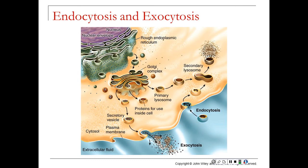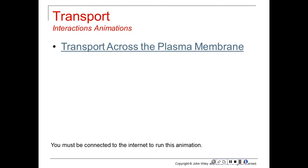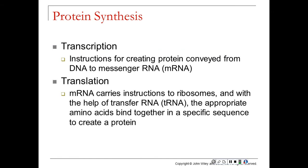Here you can see the whole pathway: endocytosis — the cell engulfing a substance, packaging it, fusing with a lysosome, forming a secondary lysosome, and recycling those particles inside the cell. The Golgi repackages things coming from the endoplasmic reticulum — possibly proteins — forming transport or secretory vesicles, fusing with the plasma membrane, and undergoing exocytosis to be released to the extracellular fluid. This video shows a bit more about transport across the plasma membrane. We'll stop here for part 2.